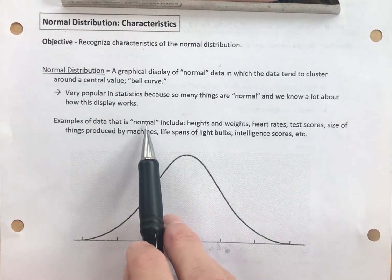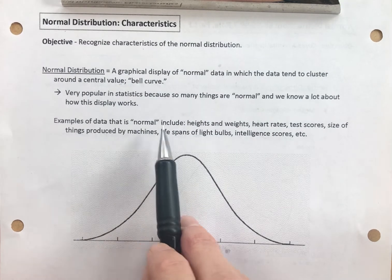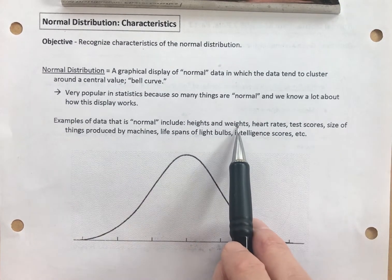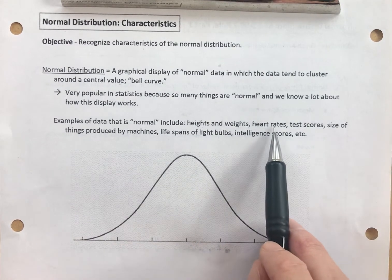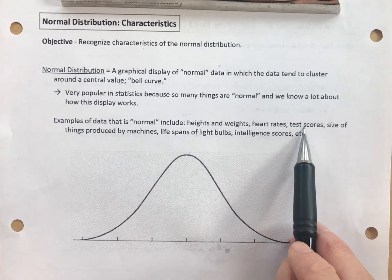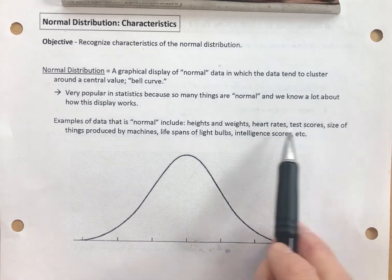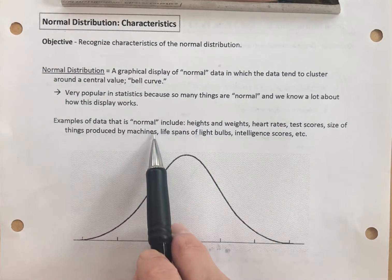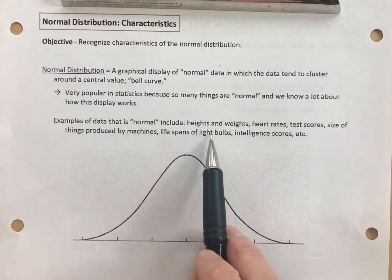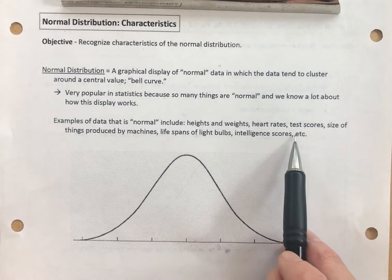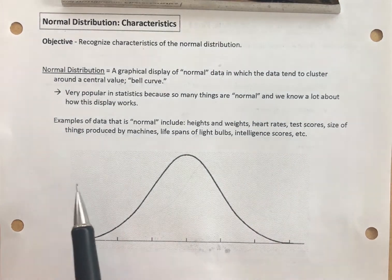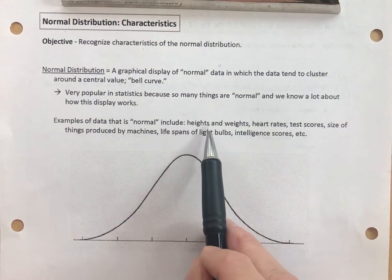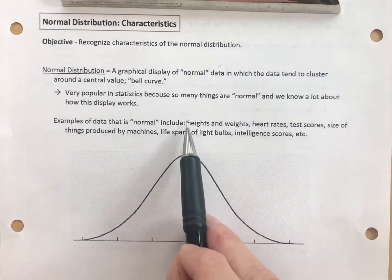Examples of things that are normal are heights, our weights, our heart rates, our test scores, size of things produced by machines, lifespans of light bulbs, intelligence scores, etc. Let's focus on heights as we'll see this also coming up in future videos.